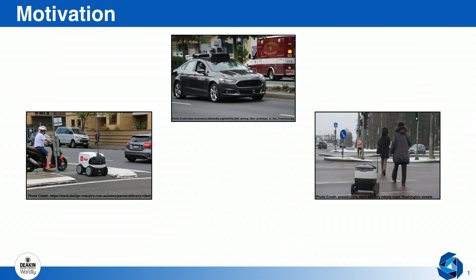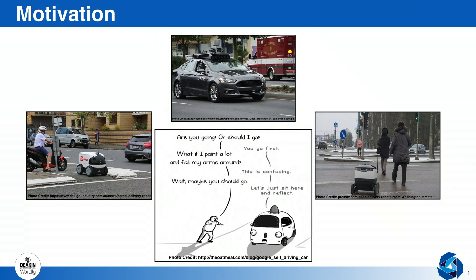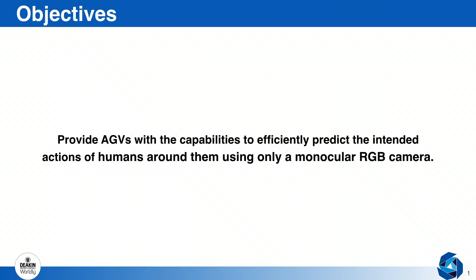Autonomous ground vehicles, also known as AGVs, are increasingly finding their way into real-life applications, ranging from food and parcel delivery to self-driving vehicles. That being said, AGVs are still confronted by a number of challenges when it comes to interacting with the humans around them, such as understanding human behaviors and intentions. Our objective is to provide AGVs with the capability to efficiently predict the intended action of the humans around them using only a monocular RGB camera. In this work, we will be focusing on crossing scenarios of pedestrians that AGVs heavily encounter in urban traffic environments.